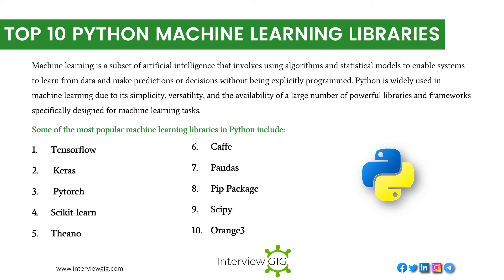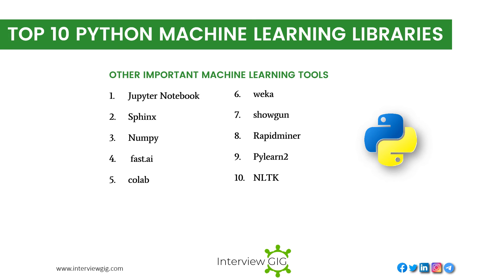Top 10 Python Machine Learning Libraries. Machine Learning is a subset of artificial intelligence that involves using algorithms and statistical models to enable systems to learn from data and make predictions or decisions without being explicitly programmed. Python is widely used in machine learning due to its simplicity, versatility, and the availability of powerful libraries. The most popular include TensorFlow, Keras, PyTorch, Scikit-learn, Pandas, Caffe, pip, SciPy, and Orange3. Other important tools include Jupyter Notebook, NumPy, Fast.ai, Colab, Weka, Shogun, RapidMiner, PyLearn2, and NLTK.